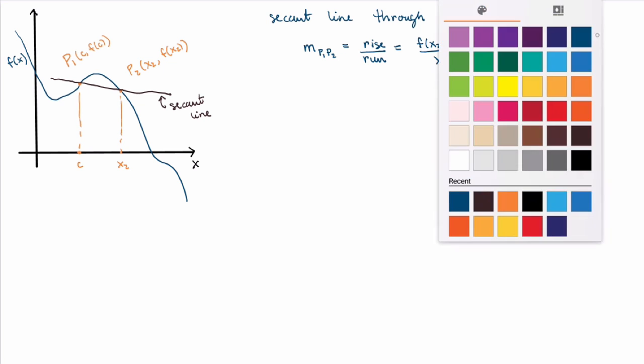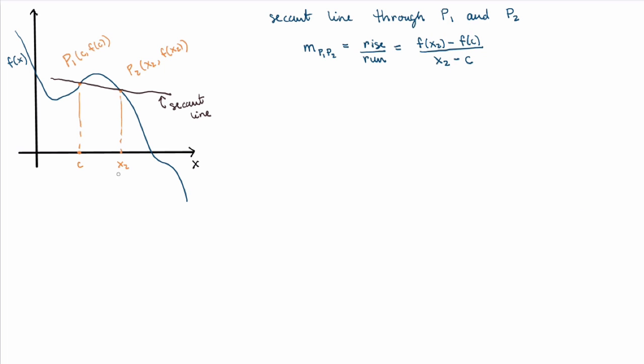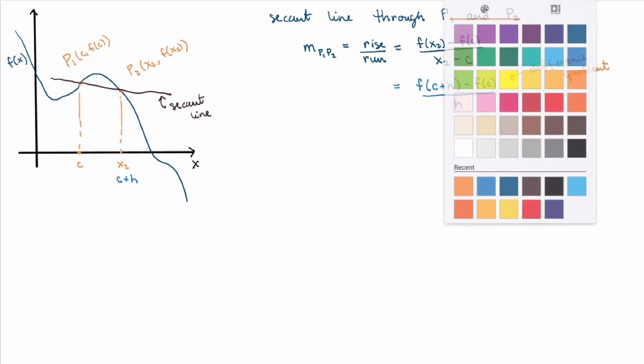Now let me introduce a new name for x2, just because I'm gonna use that later on. So if I call x2 c plus h instead of x2, then I can rewrite this expression for the slope of the secant line as f of c plus h minus f of c, divided by now x2 minus c becomes c plus h minus c, so the c's cancel, and I end up with h. Now by the way, this expression here that I have is called the difference quotient of the function f at the point c.